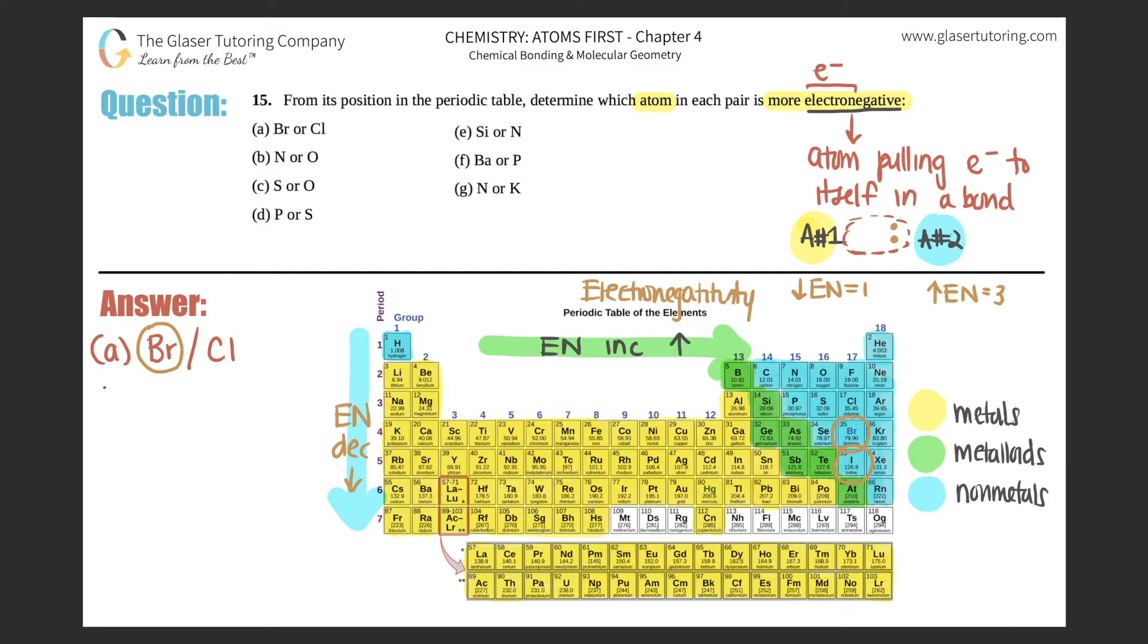Next B, nitrogen or oxygen? Nitrogen's over here. Oxygen's over here. As you go from left to right, electronegativity increases. So oxygen would have the higher electronegativity. It would pull electrons more closer to itself, oxygen, as opposed to nitrogen.